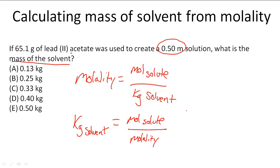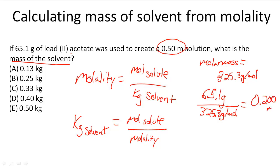We know 65.1 grams of lead(II) acetate has a molar mass of 325.3 grams per mole. Dividing 65.1 grams by 325.3 grams per mole gives 0.200 moles. Then 0.200 moles of solute divided by the molality of 0.50 molal.